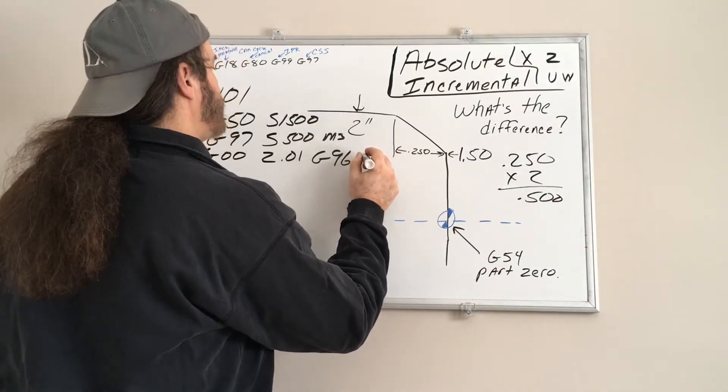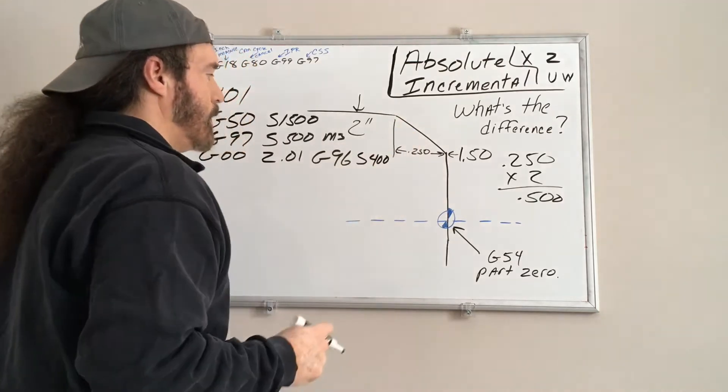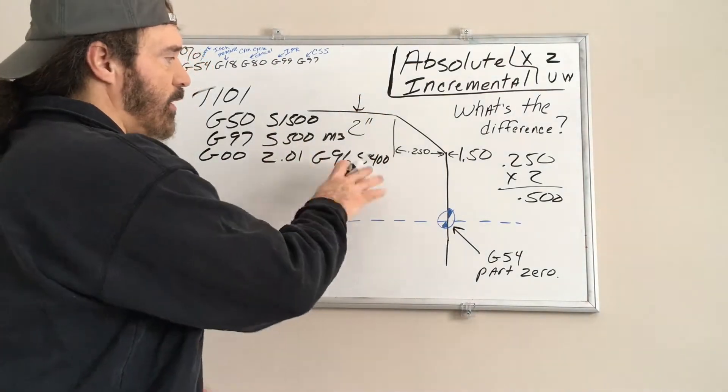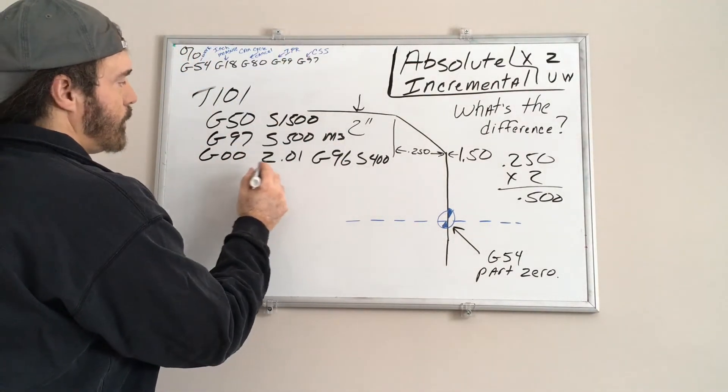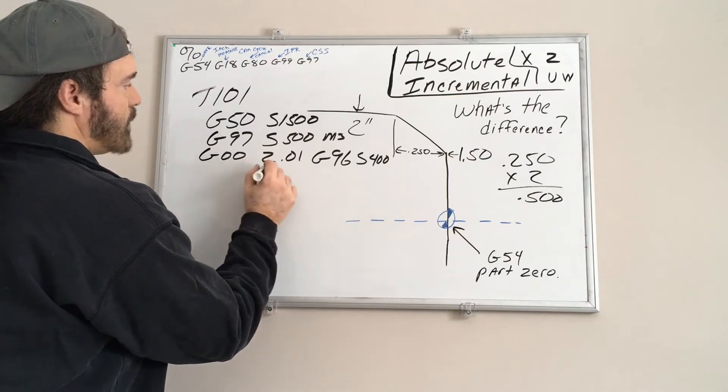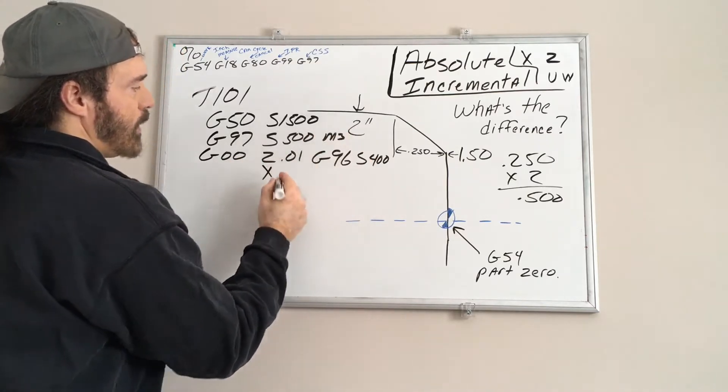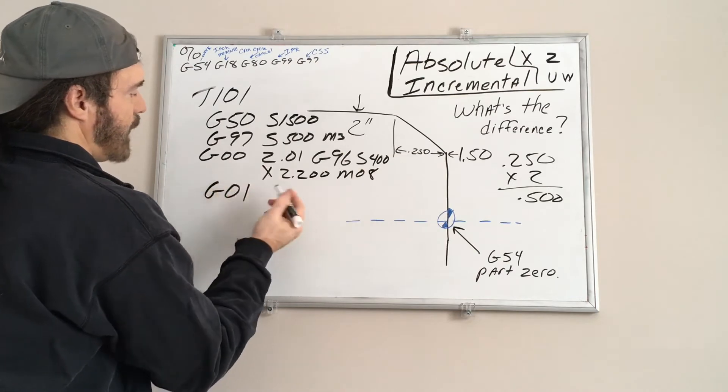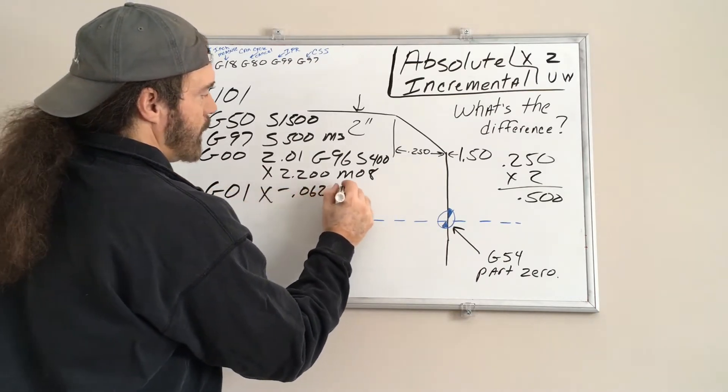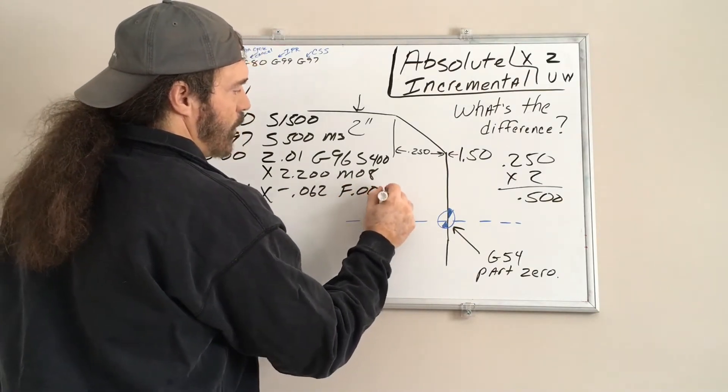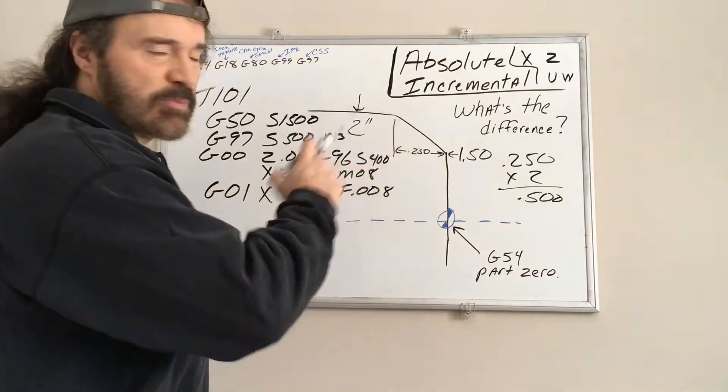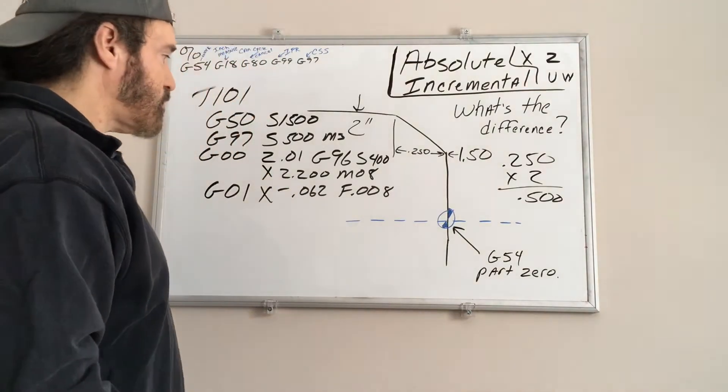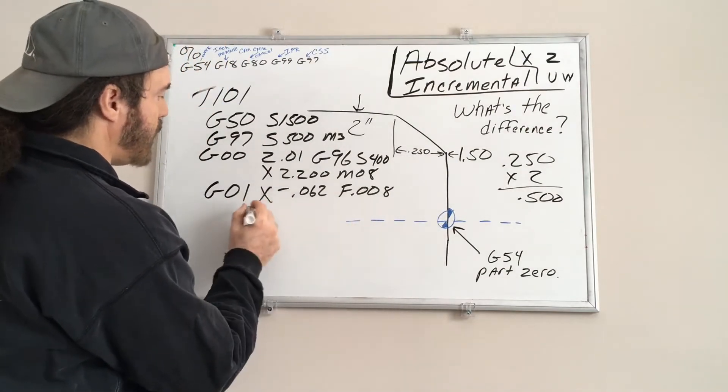We'll say 0.010, so we're 10 thousandths in front of that surface. We'll turn on surface speed. Let's say we'll call it 400. Depends what the material you're using too - steel, aluminum, they all got different surface speeds. So now we're going to rapid it down to X. We know the part's two inches. I will say 2.2. Have the coolant turn on.